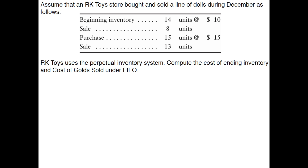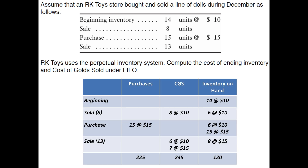Press pause on your player, give this a shot, and once you've completed the problem come back and we'll look at it together. You should have found that ending inventory is $120 and cost of goods sold for this period is $245. Looking at the spreadsheet, we started with 14 units at $10 each. We sold 8 units — all from beginning inventory — giving a cost of goods sold of $80.